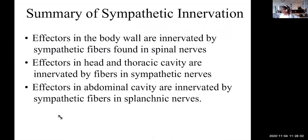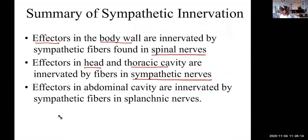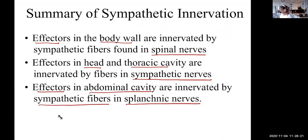In summary: effectors in the body wall are innervated by sympathetic fibers in the spinal nerves; effectors in the head and thoracic cavity by sympathetic nerves; and effectors in the abdominal cavity by sympathetic fibers in the splanchnic nerves.